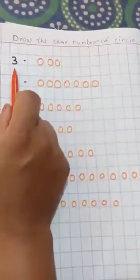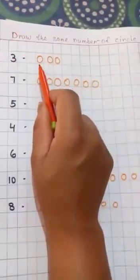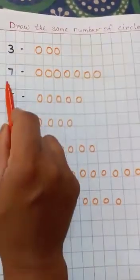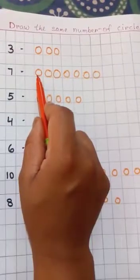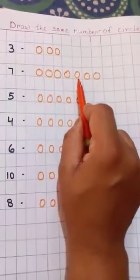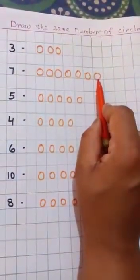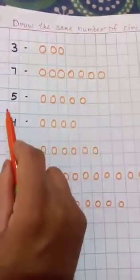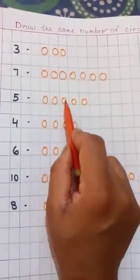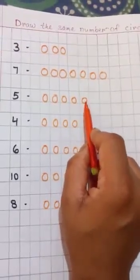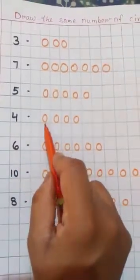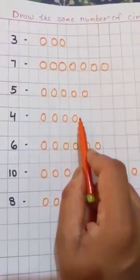Here is 3. So I draw 3 circles. 1, 2, and 3. Here is 7. I draw 7 circles. 1, 2, 3, 4, 5, 6, 7. 5. 1, 2, 3, 4, 5. Then, 4. 1, 2, 3, 4.